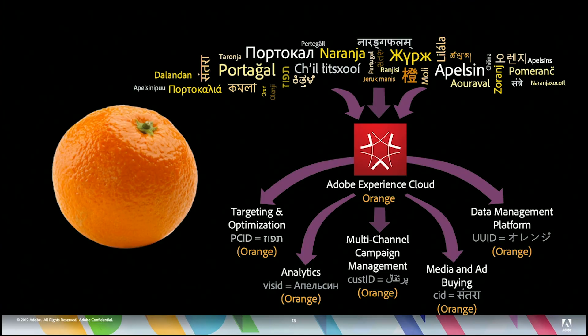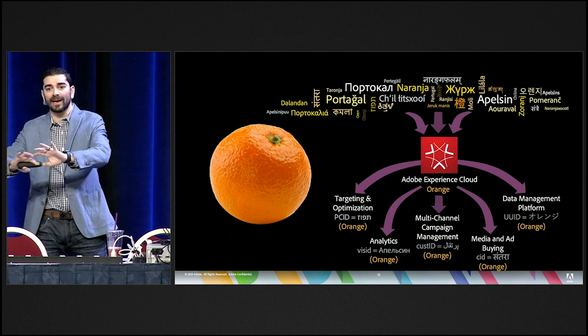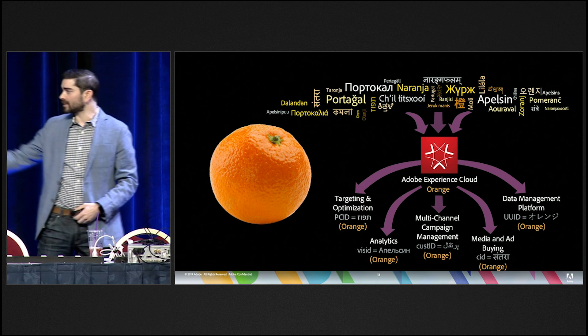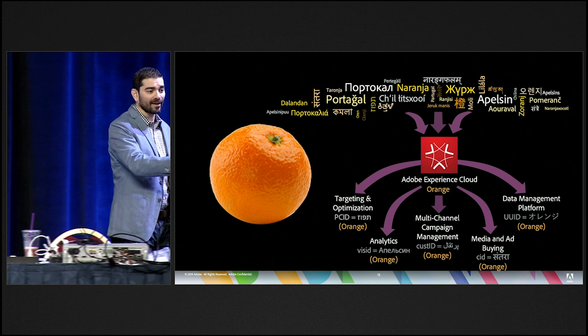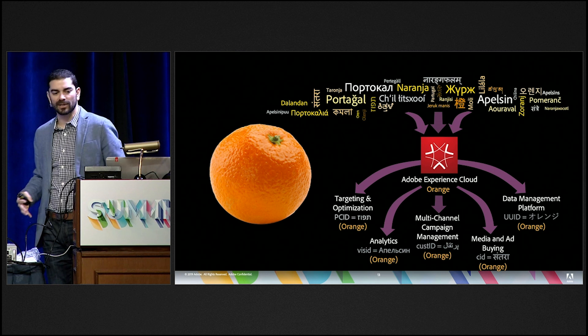And we need to think about that orange and all the different ways it's described and used across all these different languages. What the Experience Cloud ID service does is it captures all of those IDs from all those different disparate systems, funnels them through our ID service, and then disperses them out. So now we're all speaking the same language — whether it's orange, or Naranja, or any of these other languages — we're all speaking the same language when it comes to the Experience Cloud ID service.